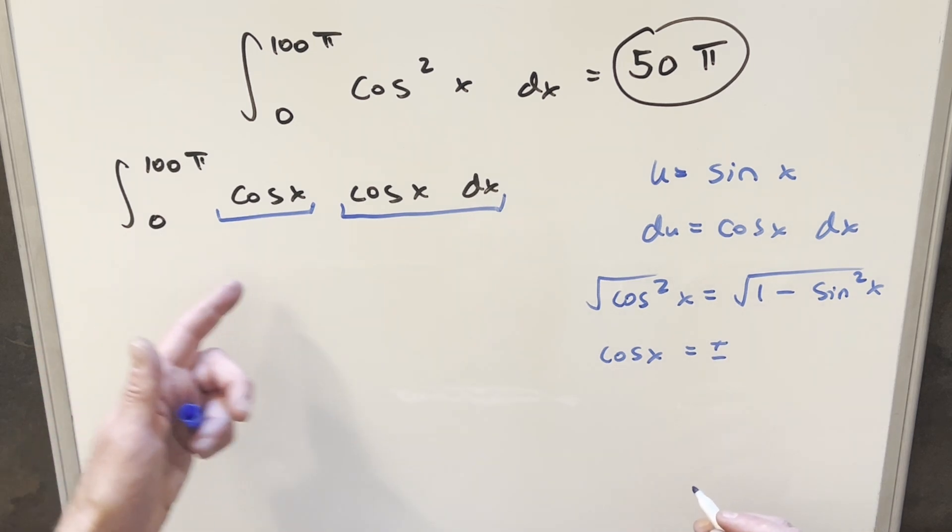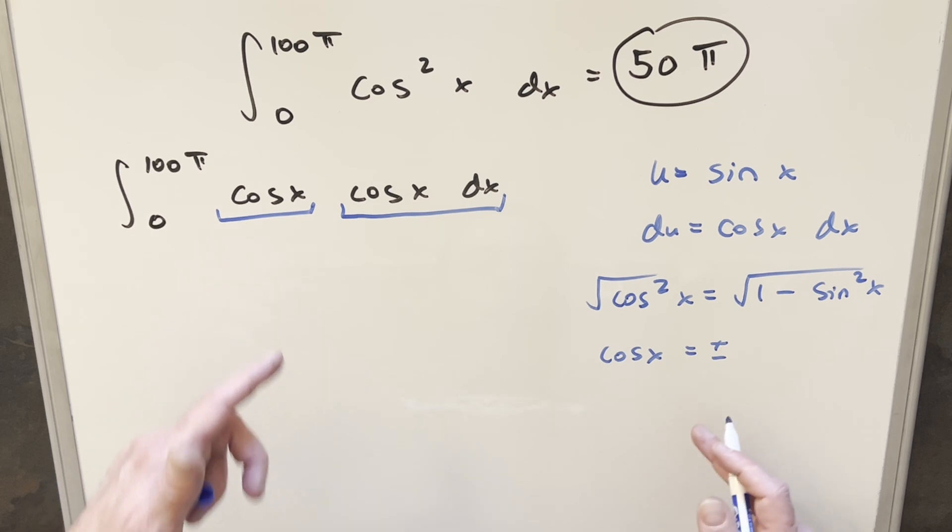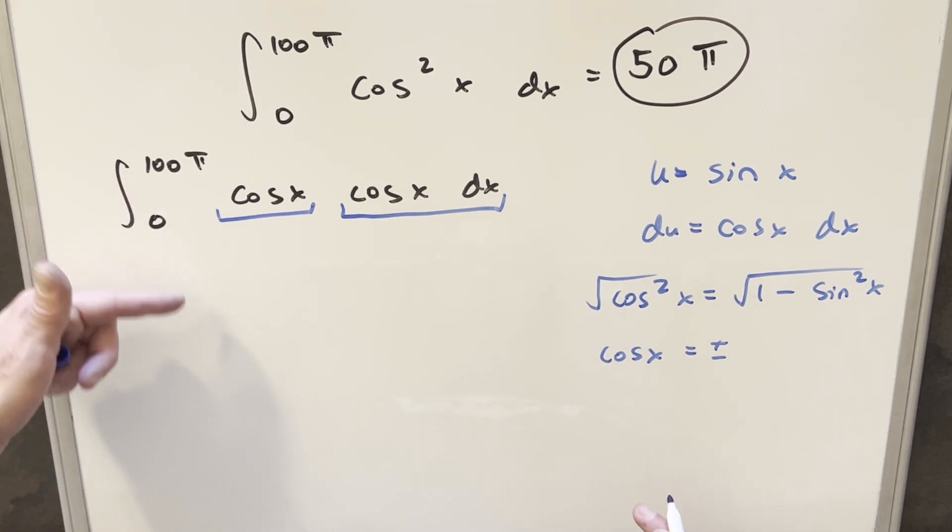But we're going to need plus minus on this, because notice cosine is not just going to be positive, the square root just returns a positive value. So we need the plus or minus to represent the negative values that we're going to get between 0 and 100π.